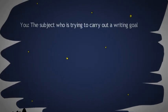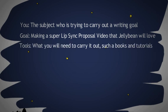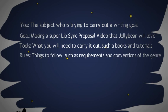Gary doesn't quite understand, so Mr. T offers him a map going over all the areas that the writing situation of a YouTube video might actually involve — such as: you, the subject, who's trying to carry out the goal; the goal — making a super lip sync proposal video that Jellybean will love; and tools — you've got to have tools: books, camera, speakers, computer, internet, video and audio editing software.